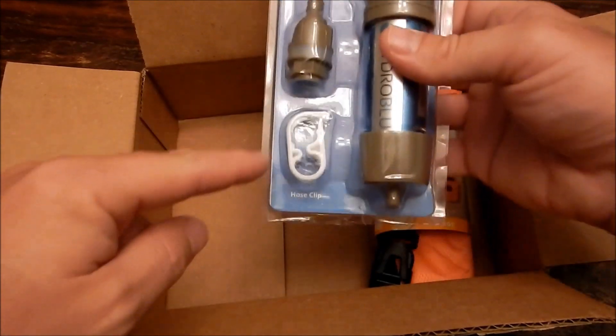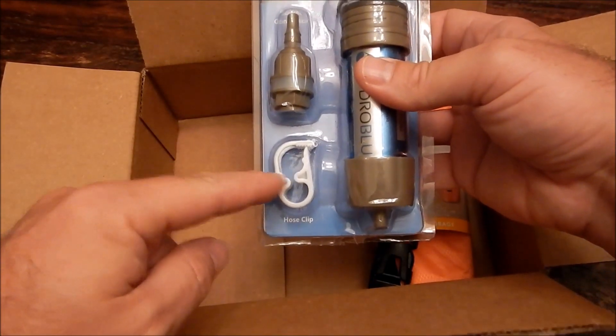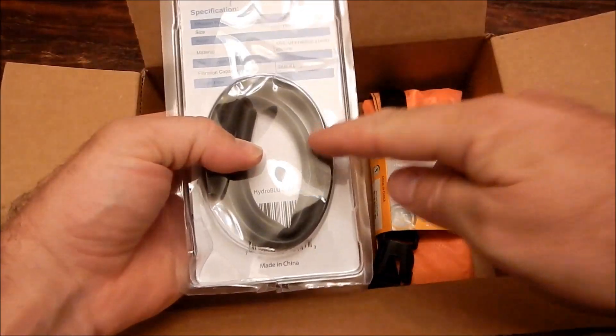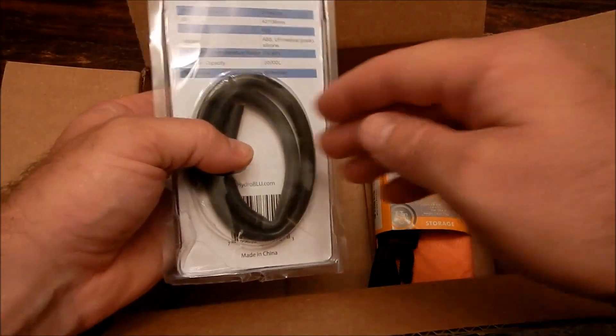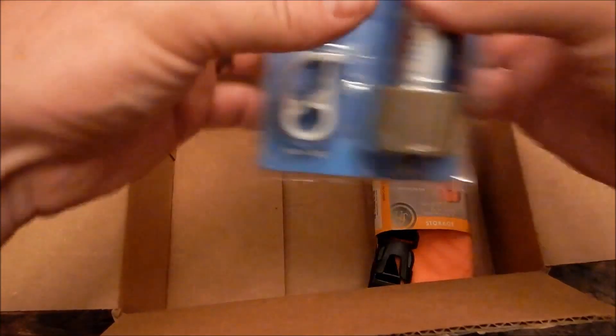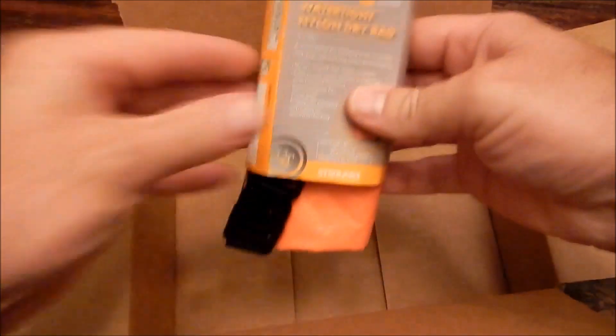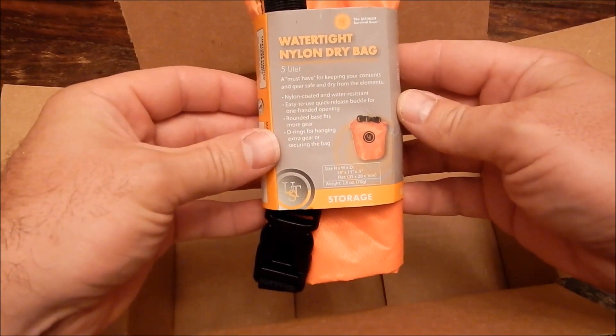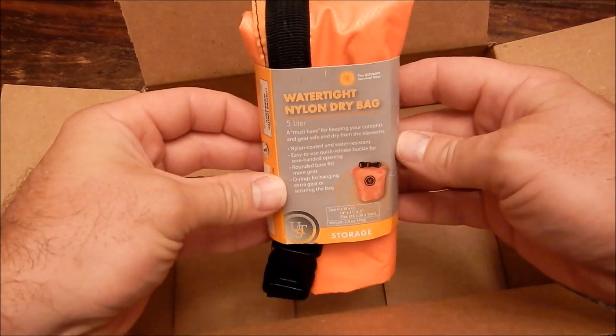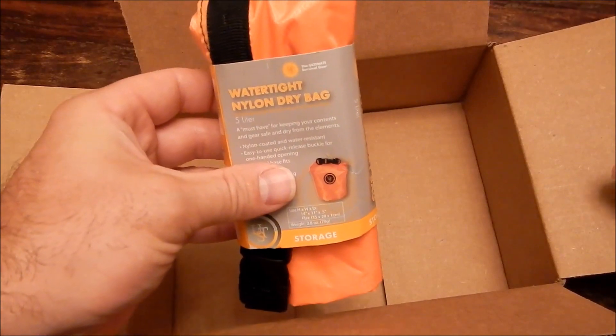And a hose clip and the tubing you'll need to create the water column, and then the UST watertight nylon dry bag. That's all you're going to need for this project.